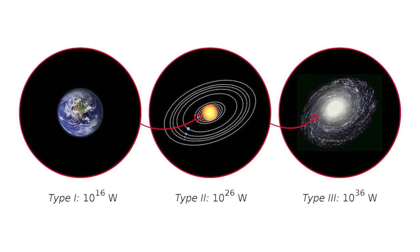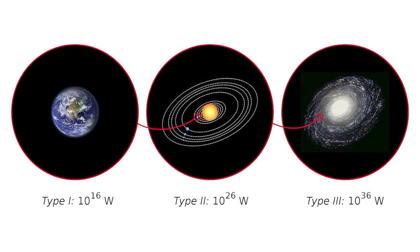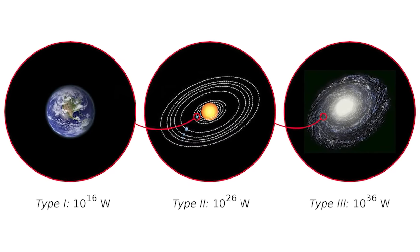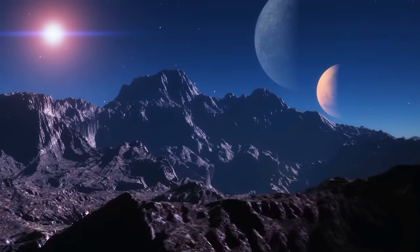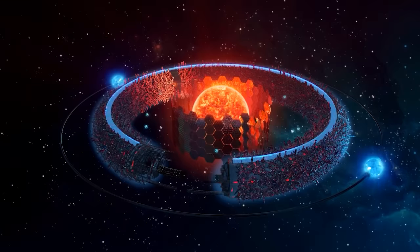This method of classification is today called the Kardashev scale. Kardashev himself defined only three types of civilizations, from type 1 to type 3, but this is expanded up to type 7 by subsequent researchers. Let's consider how each type of civilization might look.